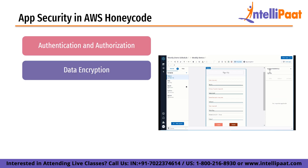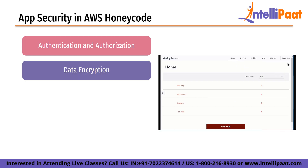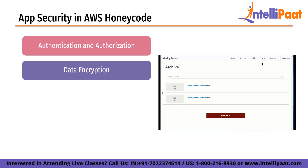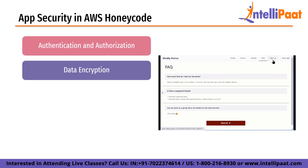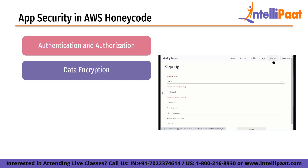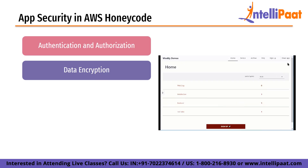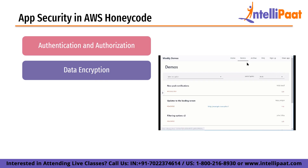Next is data encryption. Data encryption is a critical aspect of app security as it protects sensitive data from unauthorized access. In Honeycode, data encryption can be implemented using server-side encryption or client-side encryption. Server-side encryption encrypts data at rest, while client-side encryption encrypts data before it is sent to the server.